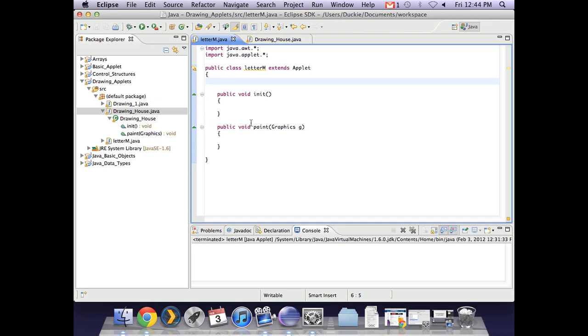So looking in Eclipse, I've just created a new class called the letter M because that's the polygon we wanted to create. So what we looked at a moment ago was that we needed an integer array to contain all the x variables. And we gave them the values of 20, 20, 30, 40, and 40. And then we created another integer array with all our y variables. And they had the values, they were 40, 20, 30, 20, 40.